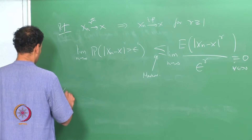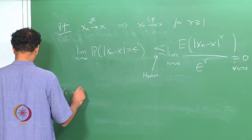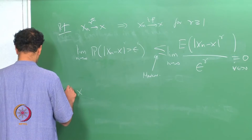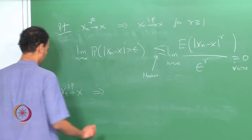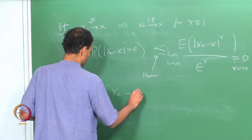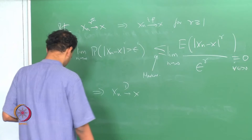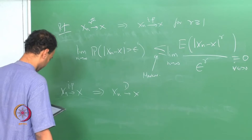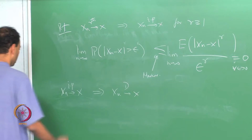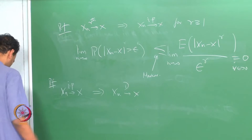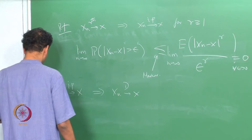This proof shows that if X_n converges to X in probability, then X_n converges to X in distribution. The proof is as follows.